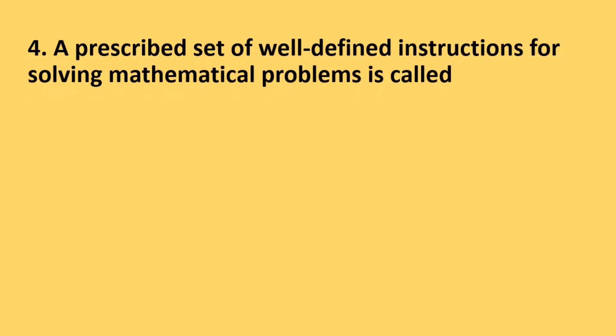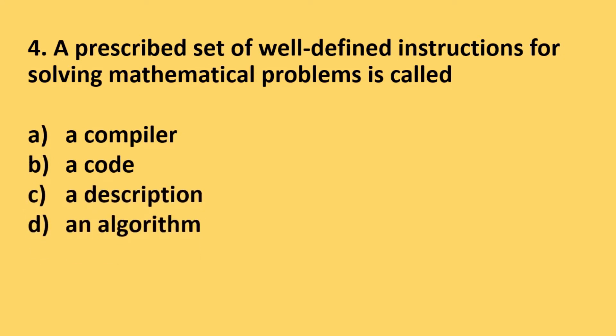Question number 4: A prescribed set of well-defined instructions for solving mathematical problems is called - options are a compiler, a code or descriptions, and an algorithm. The correct answer is option B, an algorithm.